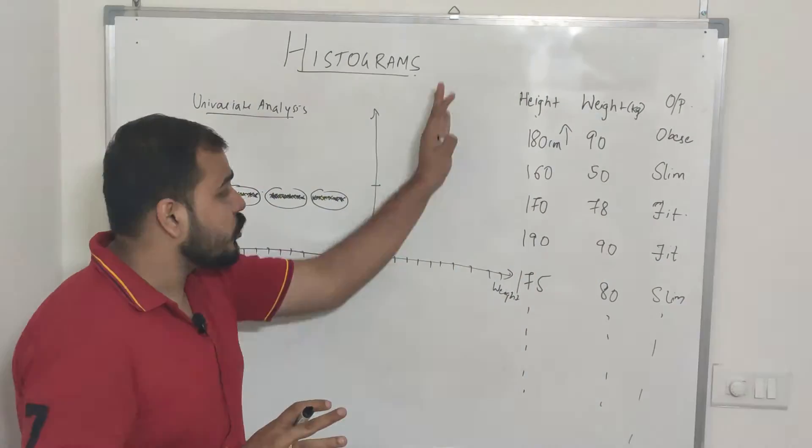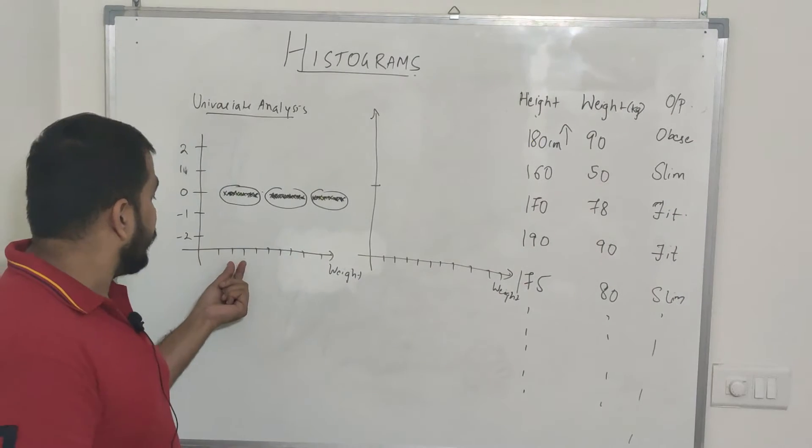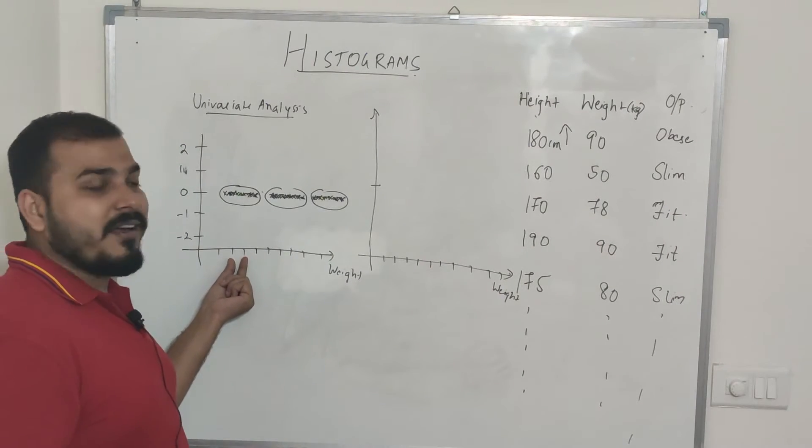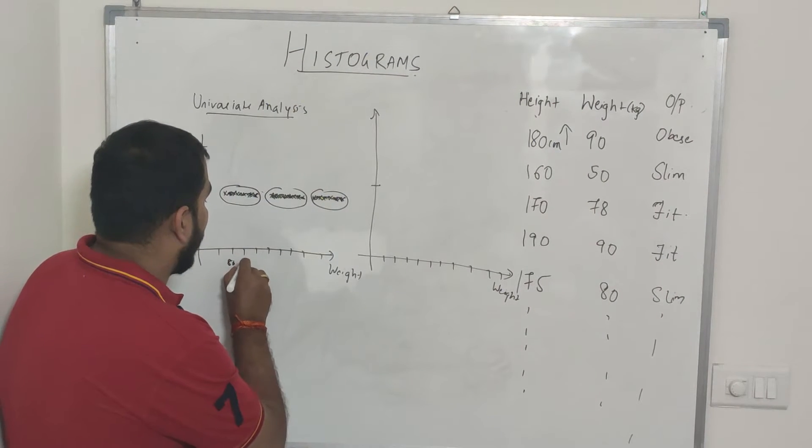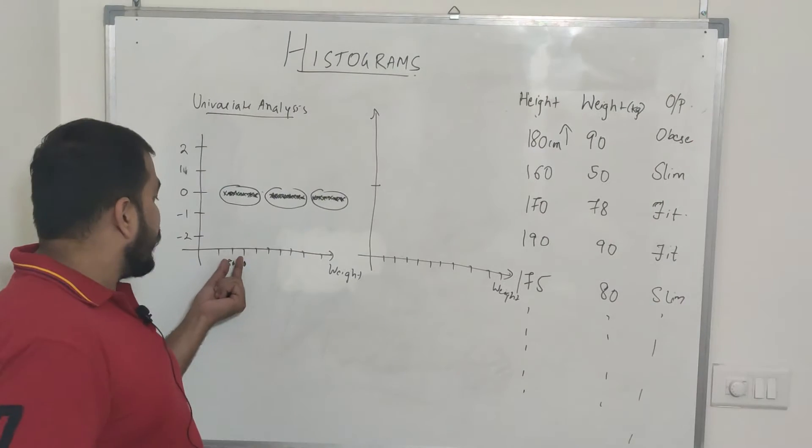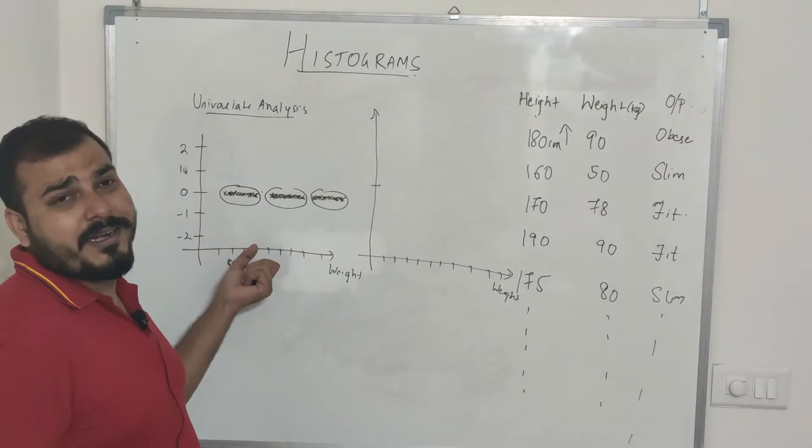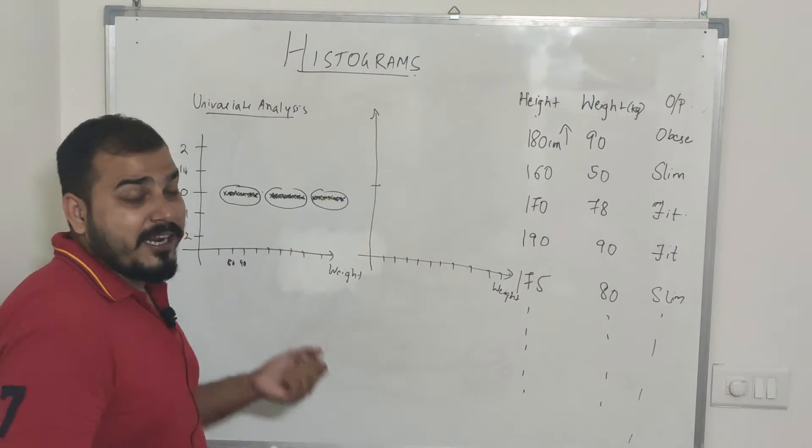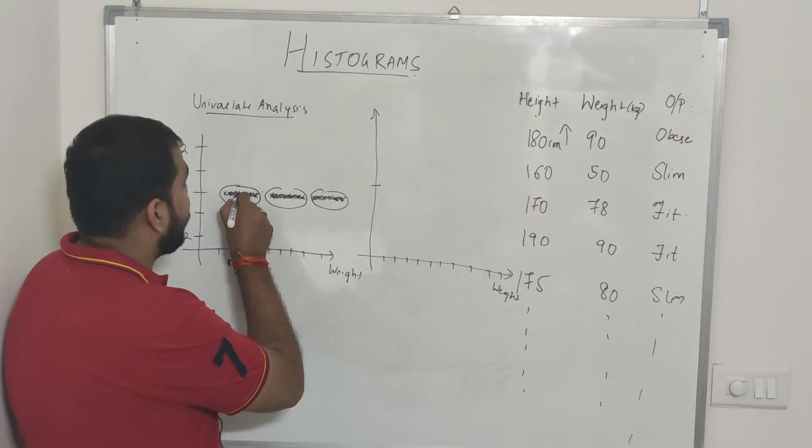We are trying to understand how histogram is actually created and what exactly is histogram. Now suppose in this particular range, suppose this range is between 80 to 90 kgs. In this particular range you can see so many points are basically populated over there, and you don't know what will be the count, how many number of points are basically falling in this particular region.